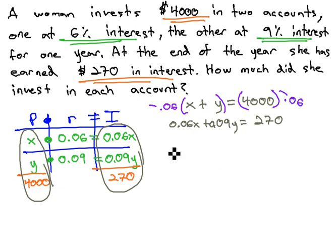When we do, the first equation is negative .06x minus .06y equals 4,000 times .06 is negative 240.